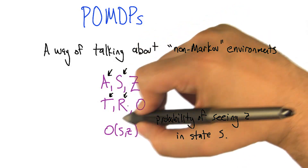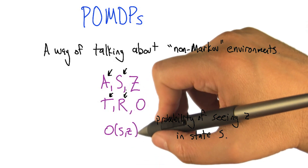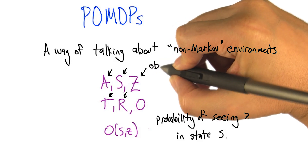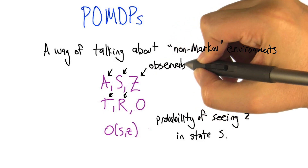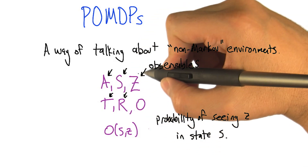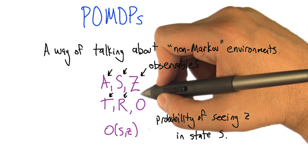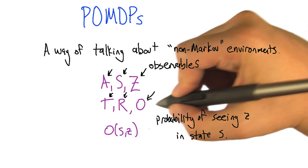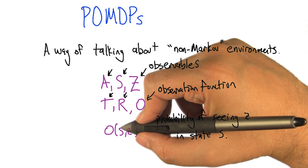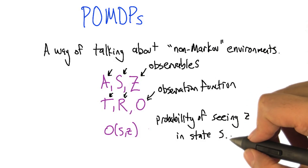But the thing is that the MDP that is inside the POMDP isn't directly observable to the agent. Instead, the agent has to make its decisions based on the observations that it makes. This Z stands for observations, or observables — it's a set like S and A. And then we need some kind of function that connects the states and the observables, just the states and the observables. We write that as O, which is the observation function. What O consists of is a mapping from state and observation to the probability of actually seeing that observation given that the agent is currently in that state S.